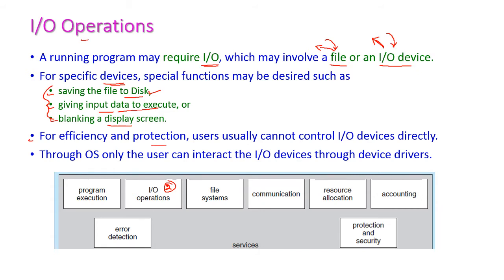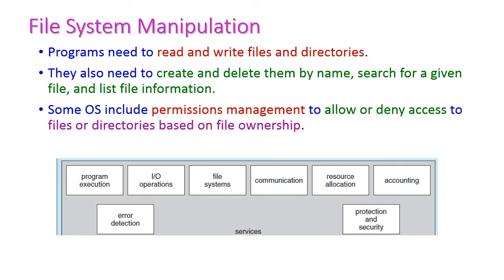Users usually cannot control IO devices directly. Only through the operating system can users interact with IO devices — getting input from input devices or sending output to output devices — through device drivers, because through device drivers only are all input devices connected to the computer.